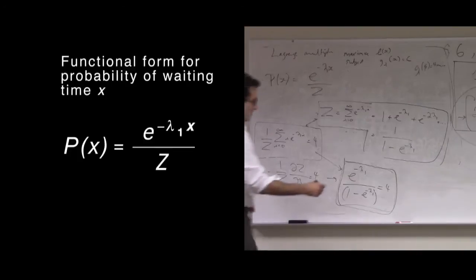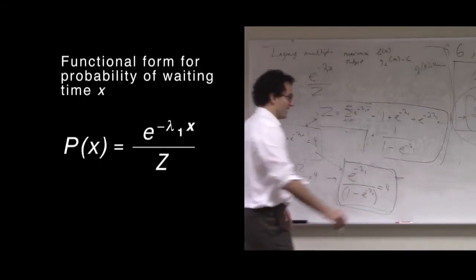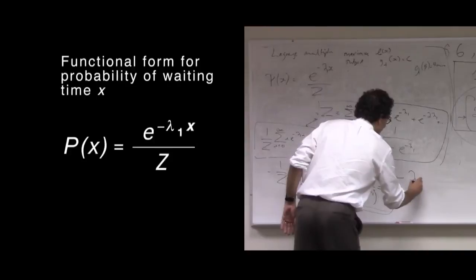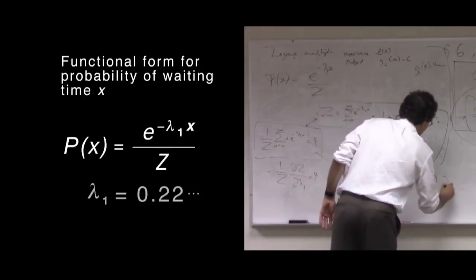So, we're left with this equation here, and instead of solving out exactly, because we have some logarithms, I can tell you the answer that lambda 1 is equal to roughly 0.22.